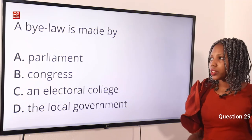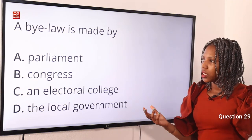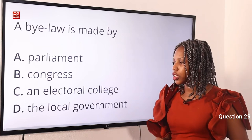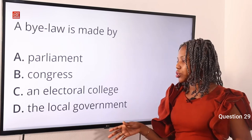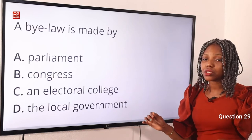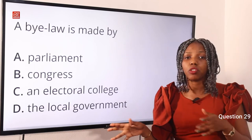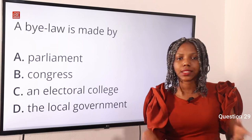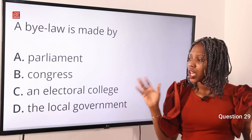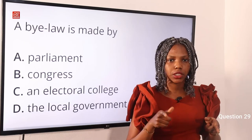Question 29. A bylaw is made by: Option A, parliament. Option B, congress. Option C, an electoral college. Option D, the local government. The answer is local government. Bylaws are made by local government, organizations, or public corporations. Option D is the correct answer.